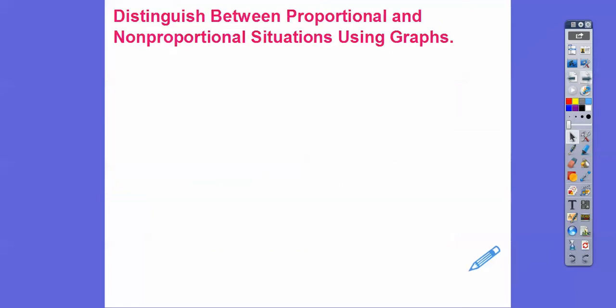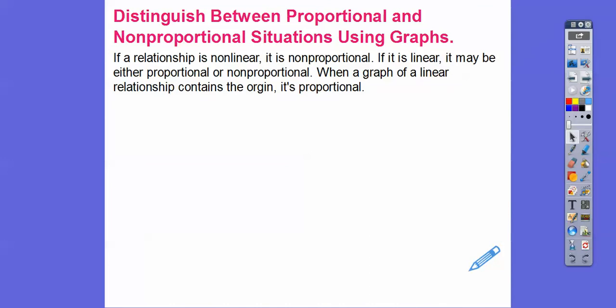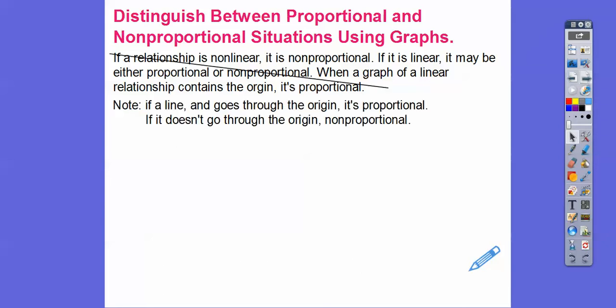We've talked about this already several times, so here we go. If a relationship is non-linear — which just means it does not graph a line, it might graph a curve — then it is non-proportional. If it is linear, it may be either proportional or non-proportional. When the graph of a linear relationship goes through the origin, then it's considered proportional. Otherwise, it's non-proportional.